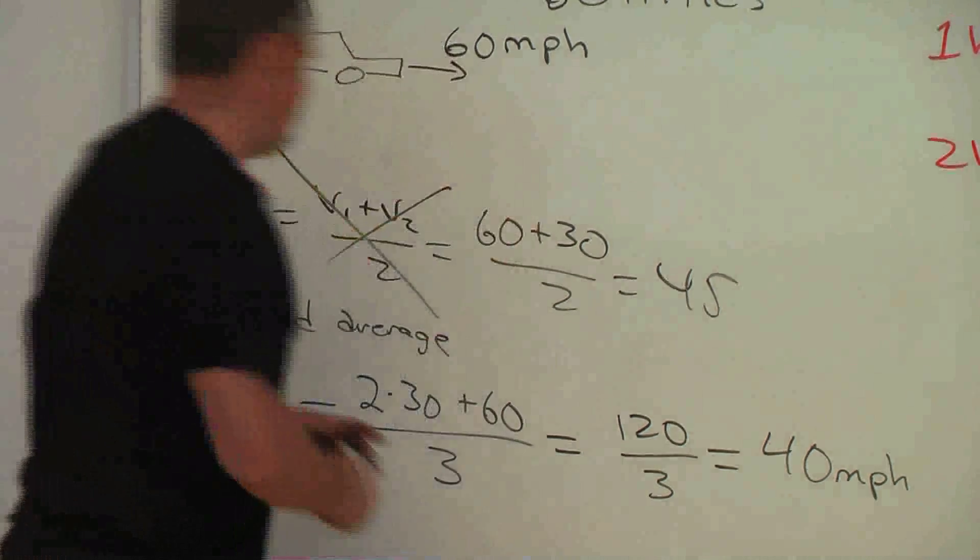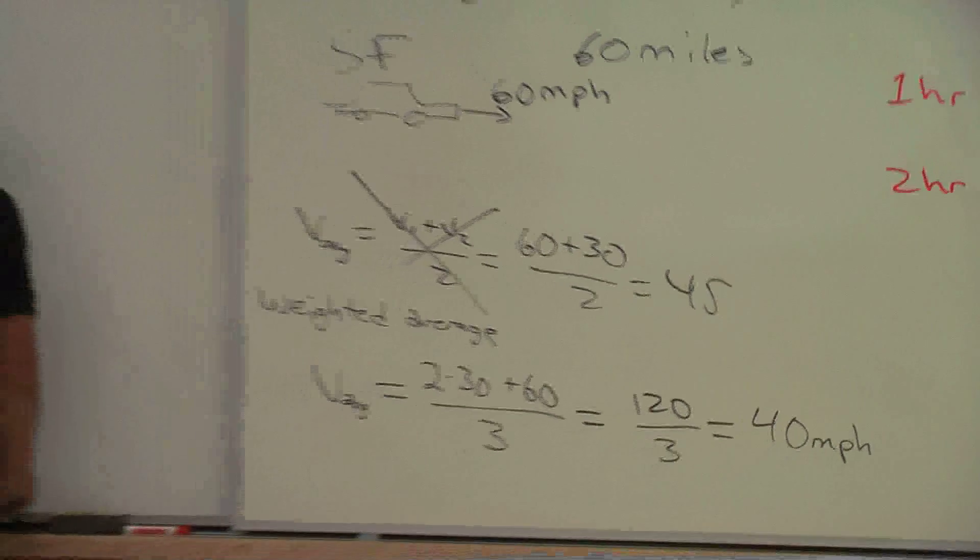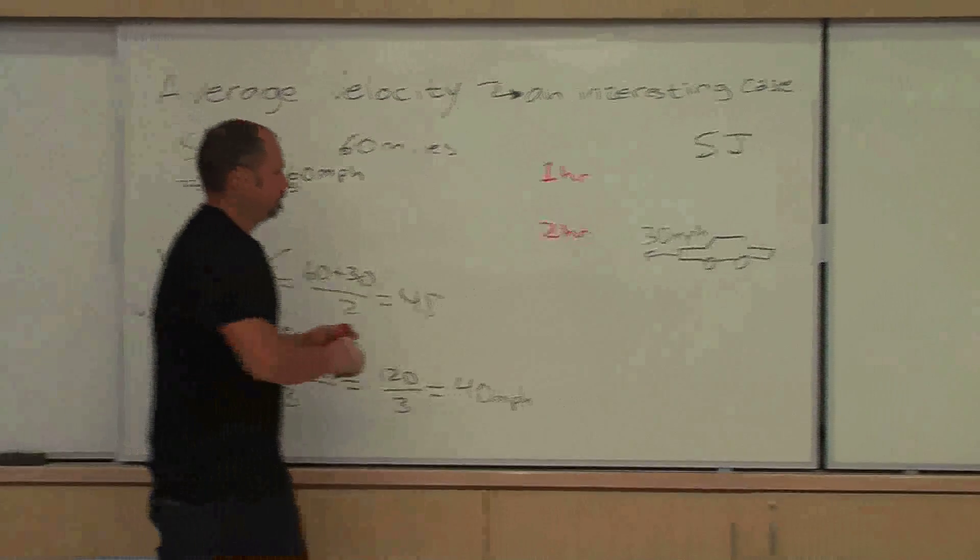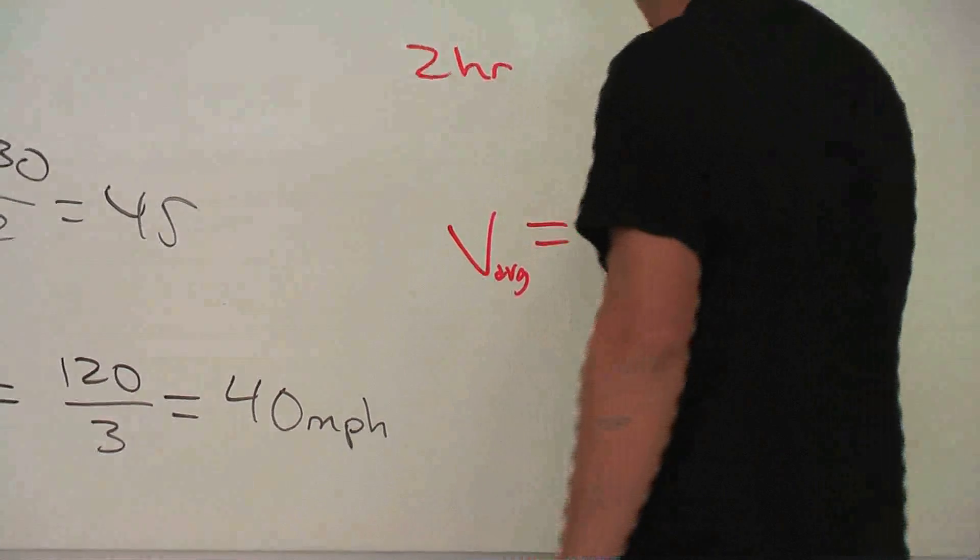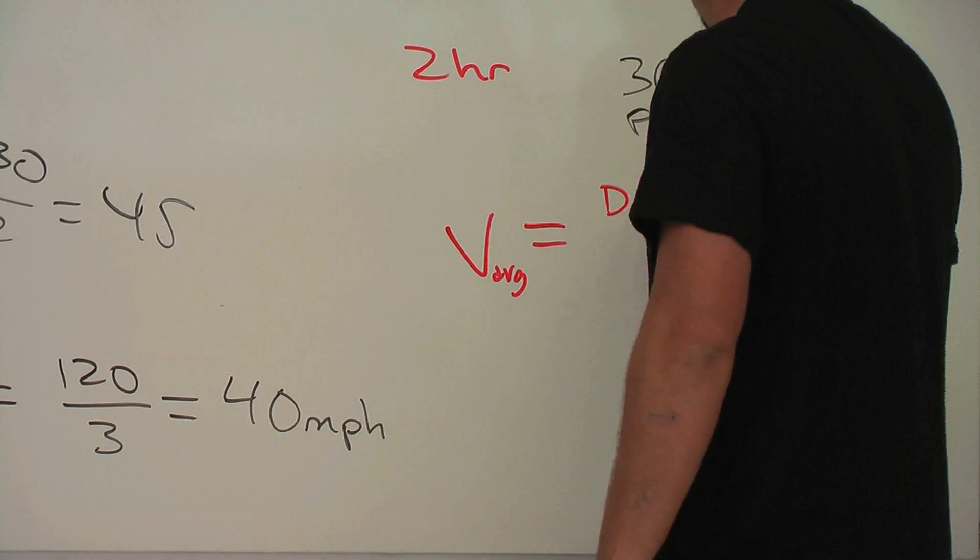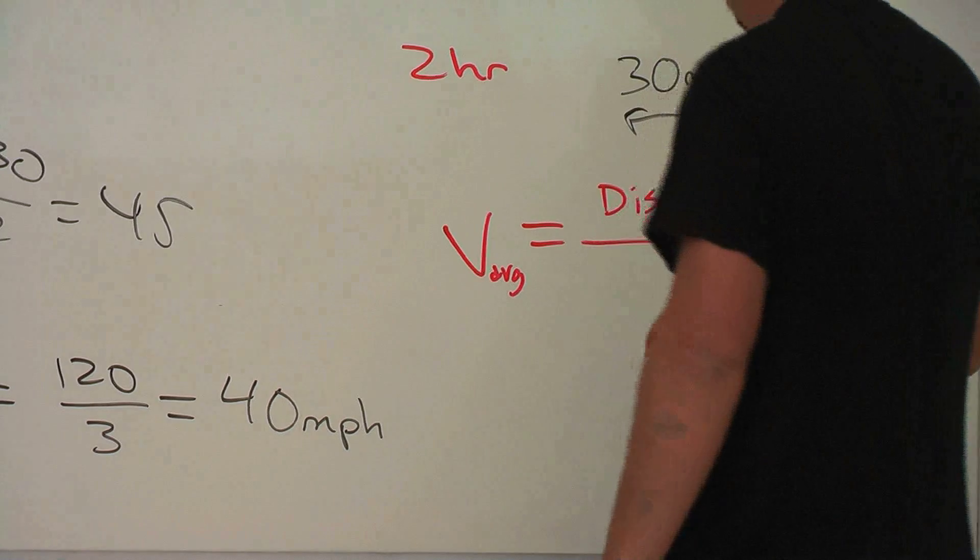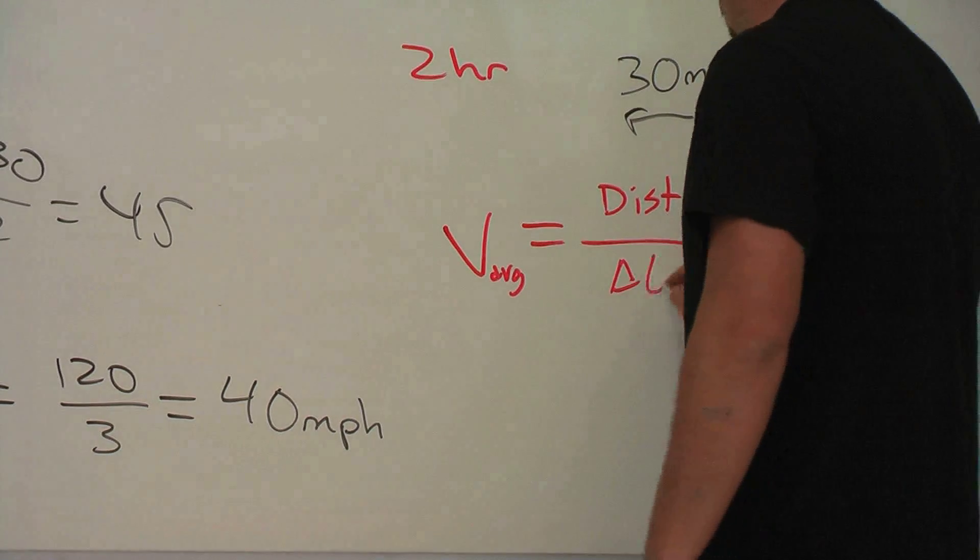Another way to think about it is that, well, hey, I know, by definition, the average velocity is the distance divided by the total time.